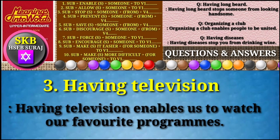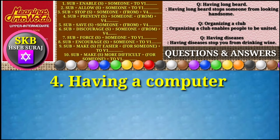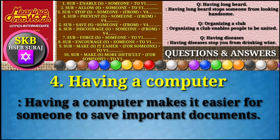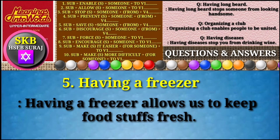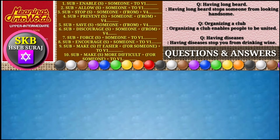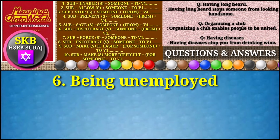Question number three: 'having television.' Answer: Having television enables us to watch our favorite programs. Question number four: 'having a computer.' Answer: Having a computer makes it easier for someone to save important documents.